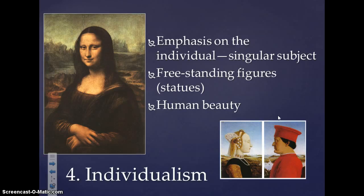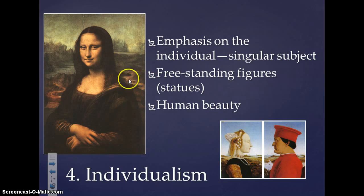Individualism is seen in artwork by the focus on singular objects. In da Vinci's Mona Lisa, she is the sole focus of the painting. We also see the use of perspective, as the mountains and rivers in the background are much smaller in comparison to Mona Lisa in the foreground. Individualism is also seen in statues because they are freestanding, as opposed to being connected to a wall or some other structure.